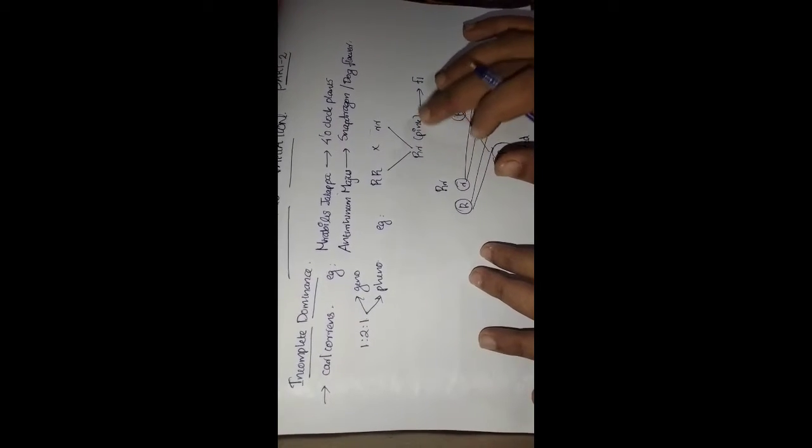In the heterozygous condition — capital R small r — the R gene is unable to completely suppress the small r gene. Both genes together express their characters, and the resulting character is an average of both red and white, giving pink color. This is called incomplete dominance — neither red nor white, but pink.